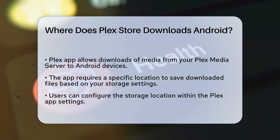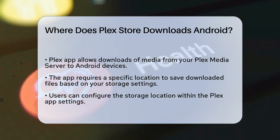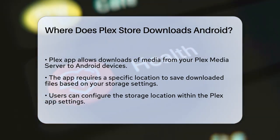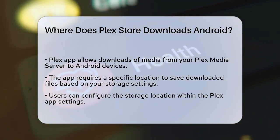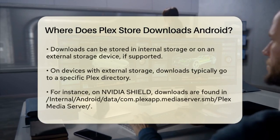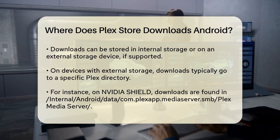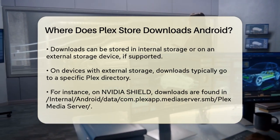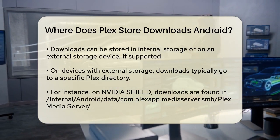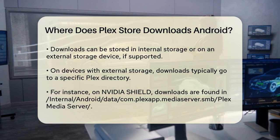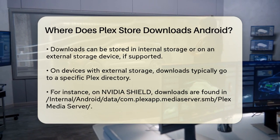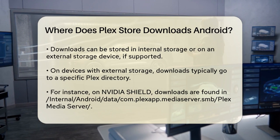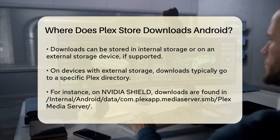This location is tied to the storage settings you configure within the Plex app. To find out where your downloads are stored, you need to look at the storage settings in the Plex app. Here you can select the storage location that the app will use for synced content — this could be your device's internal storage or an external storage device if your device supports it.